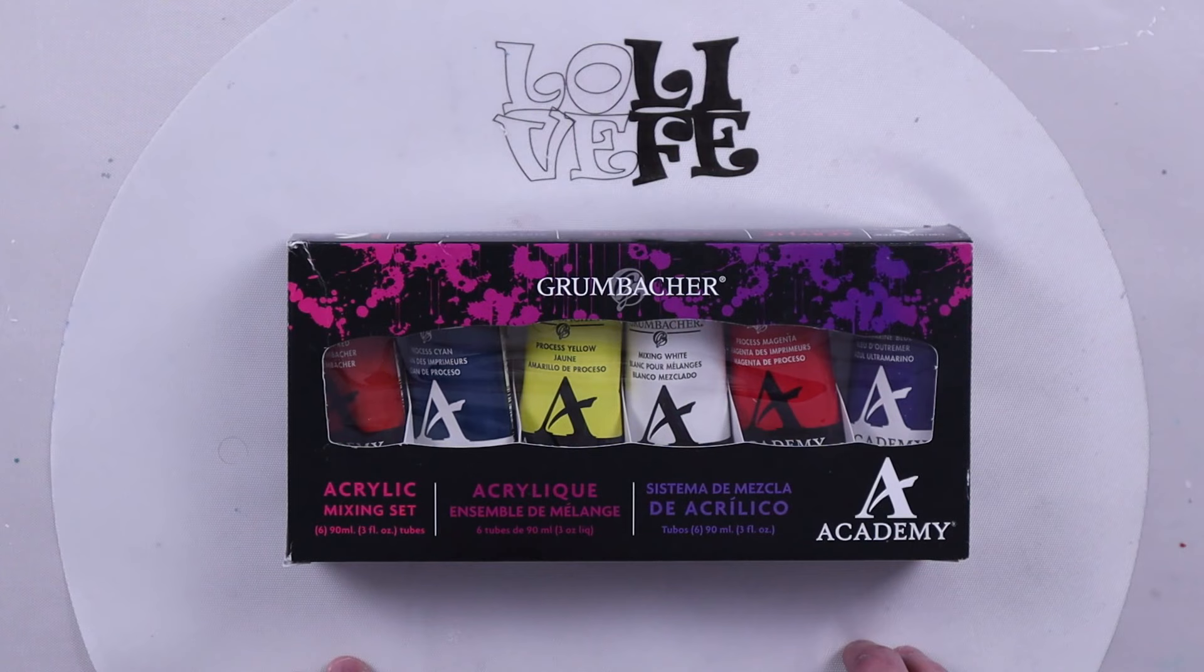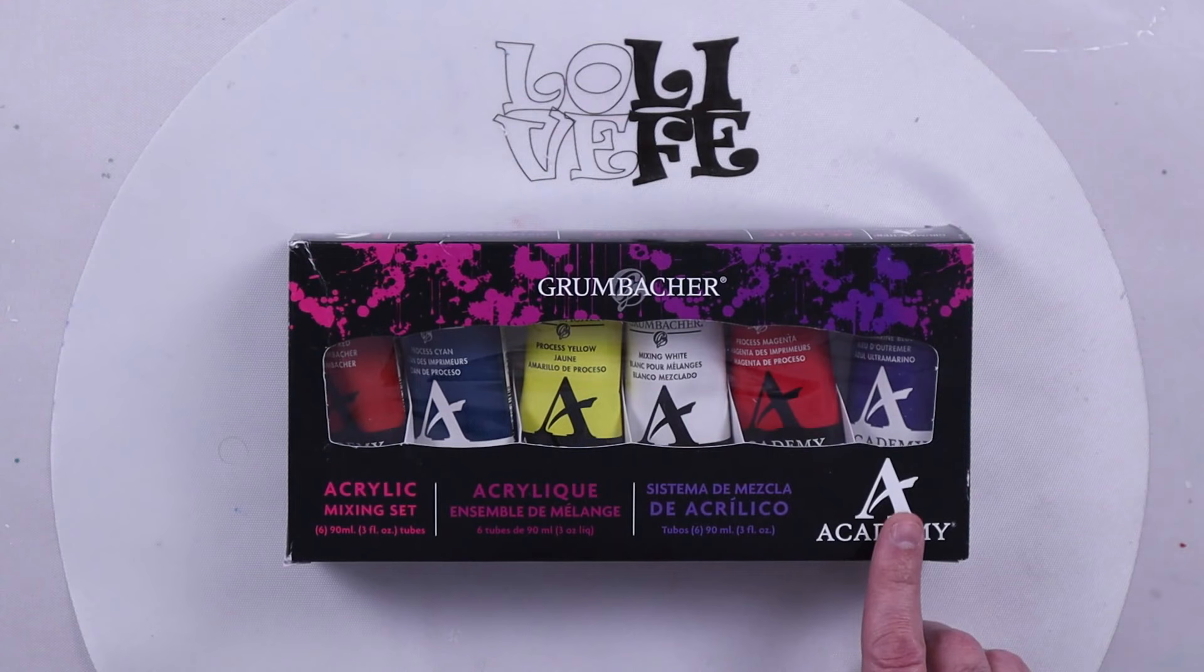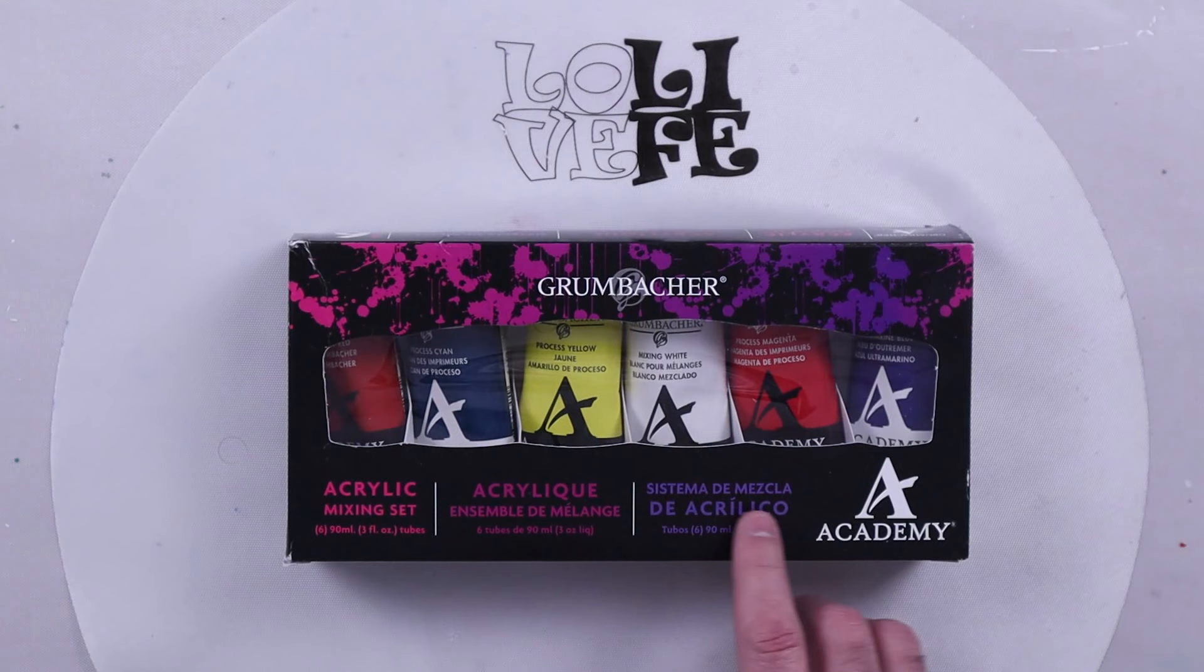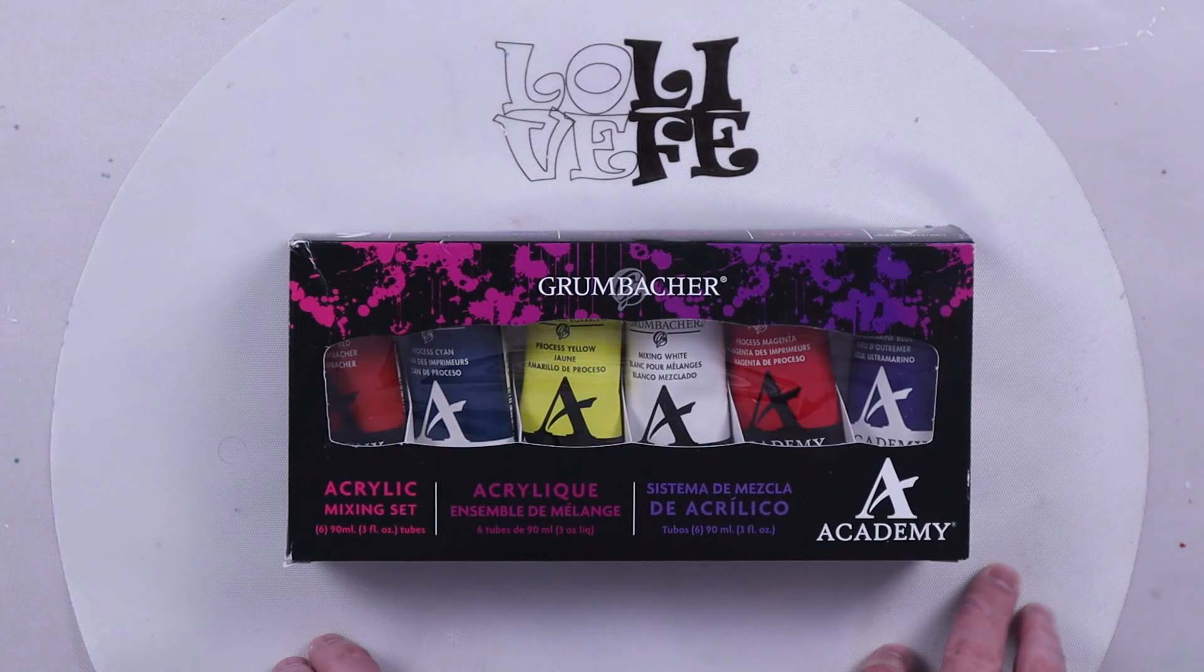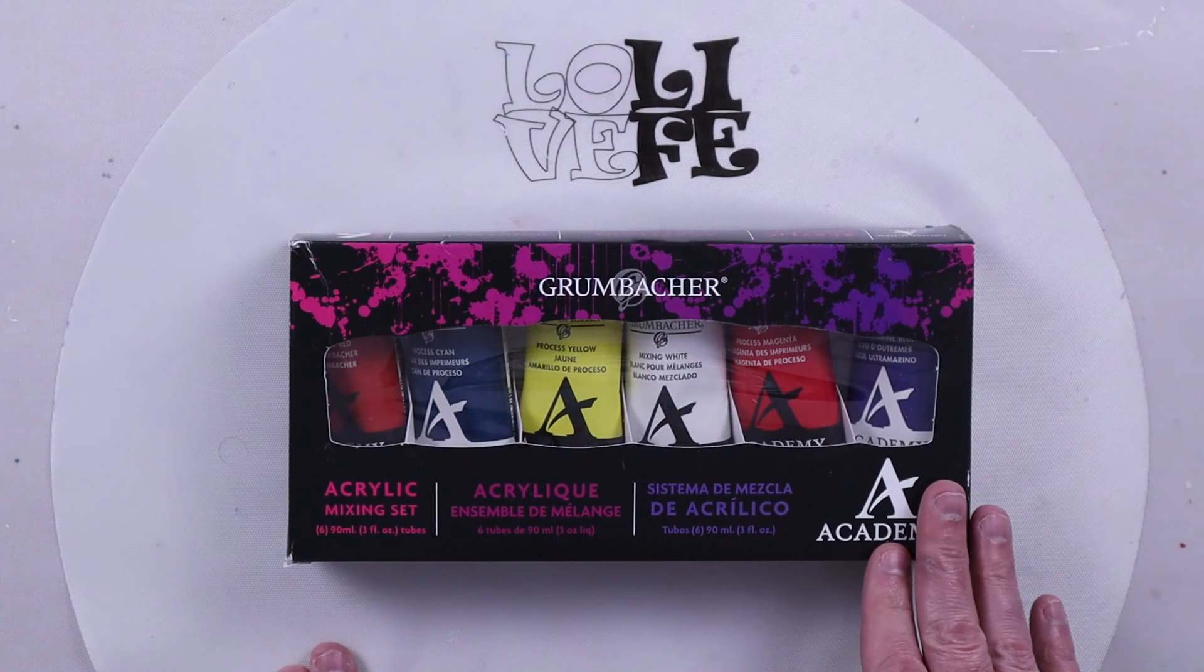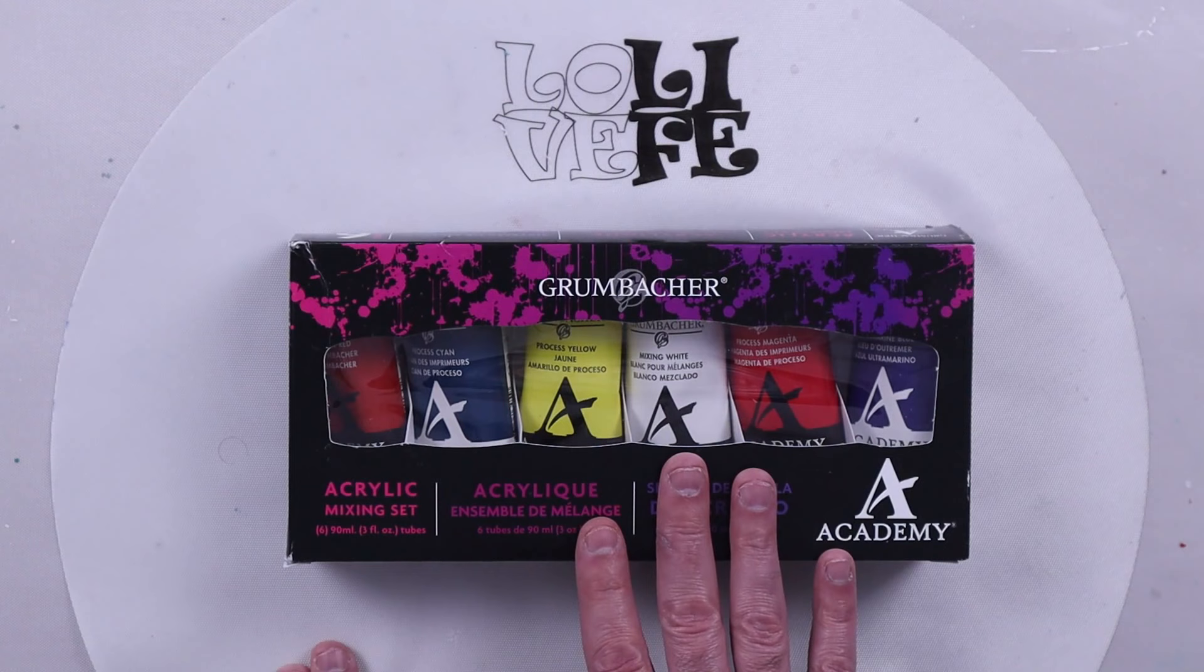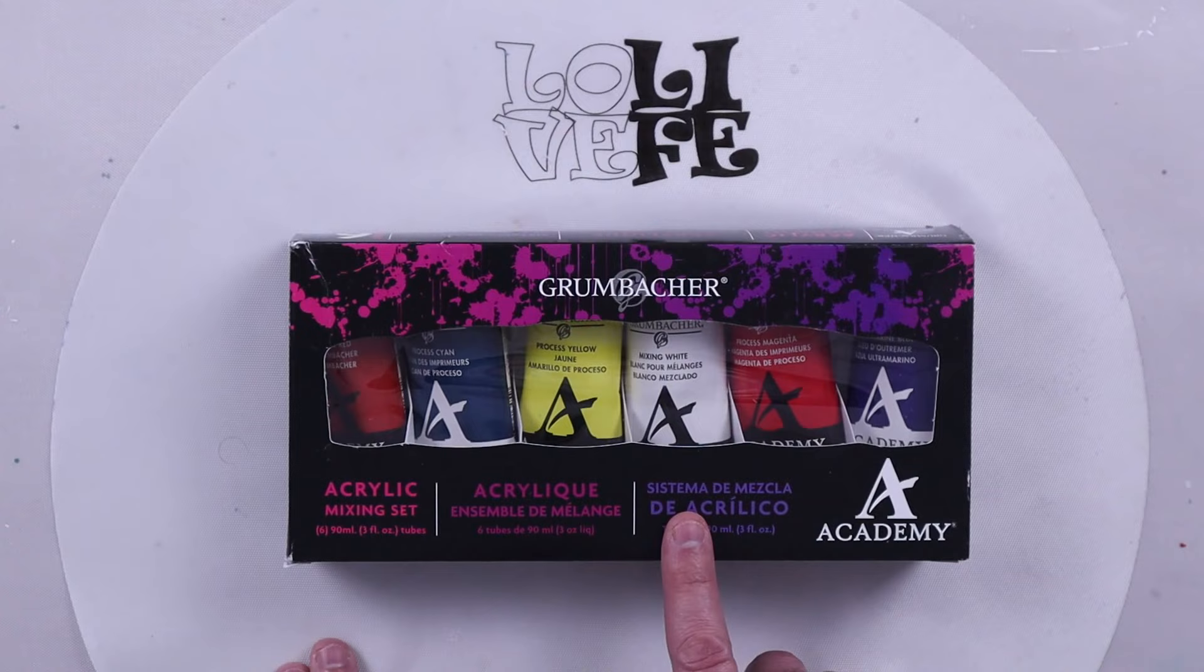The cost for this is actually on the expensive end, about a little more than a dollar per ounce, so we're going to see how well that translates. One claim to fame that this Grumbacher has is all of their paints are lightfastness one, which means they claim all their paints should last over 100 years with the lightfastness one on the ASTM rating. Every paint that I looked at did have a lightfastness of one, and they claim these are student-level acrylics—professional acrylics at a student-level acrylic price, so we're going to put that to the test.